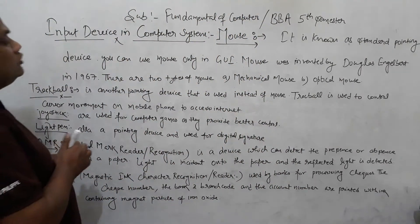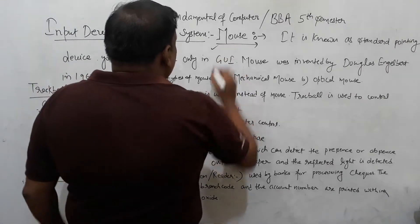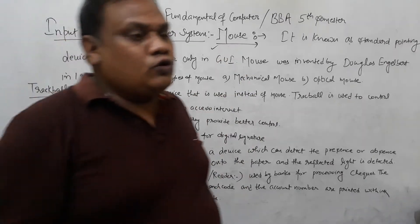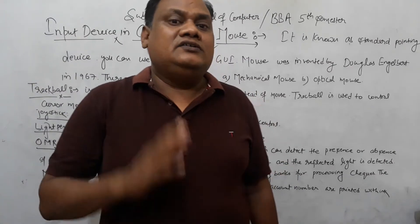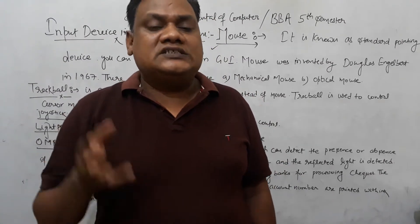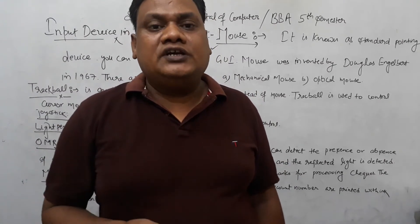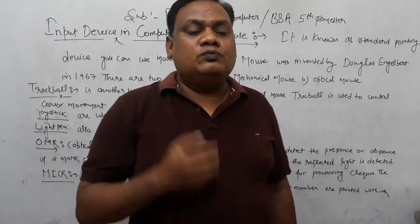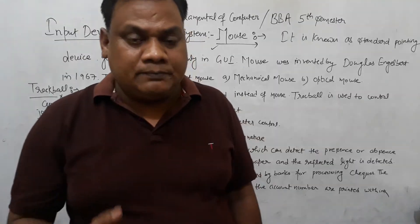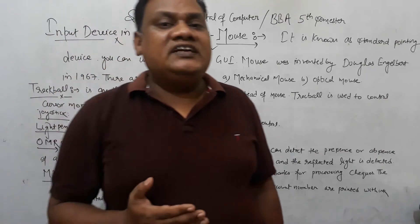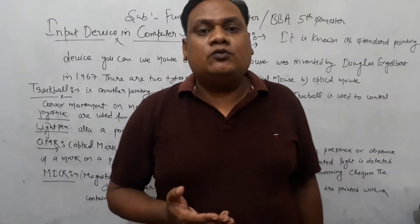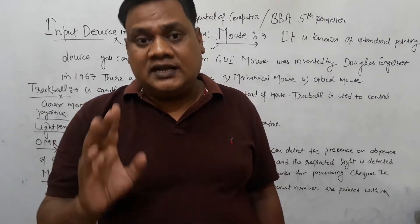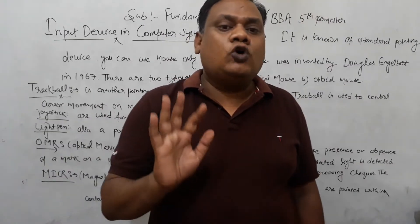One input device is the mouse. The mouse supports click, double click, and drag and drop. The functionality of the mouse is that it is a pointing device. A pointing device moves the cursor to point to objects on screen.